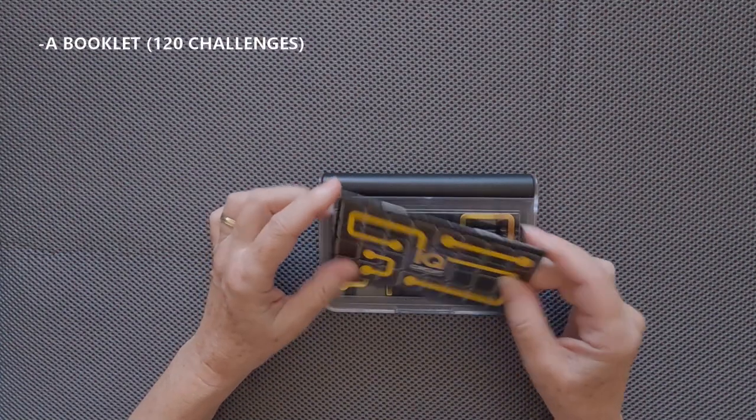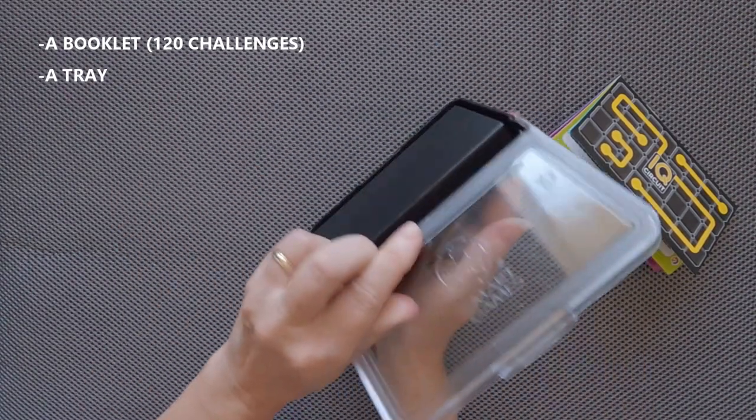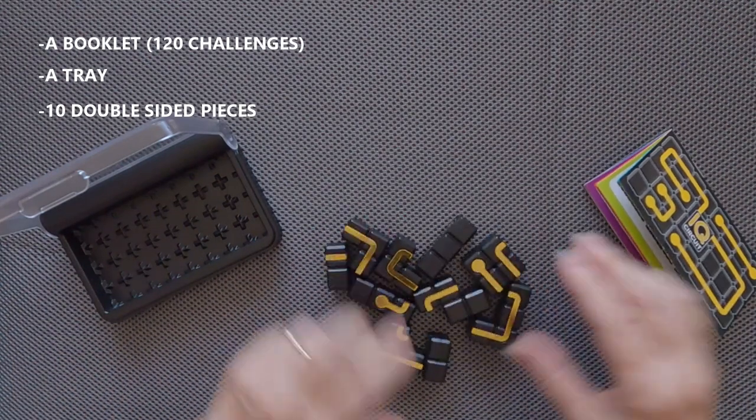With AccuCircuit comes a booklet with 120 challenges, a tray, and 10 double-sided pieces in different sizes and different shapes.